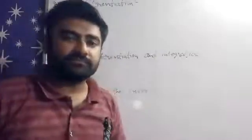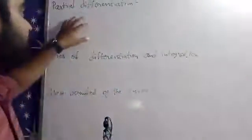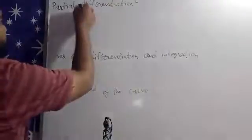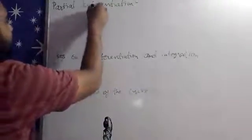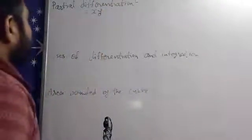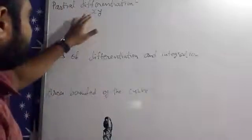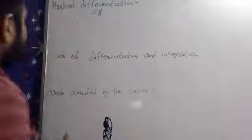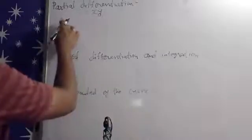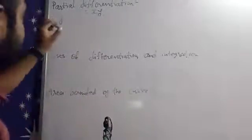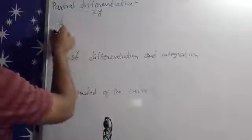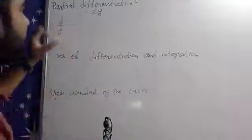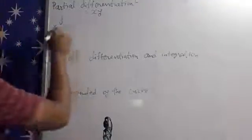So the first topic is partial differentiation. Basically, if we have a term V is equal to X into Y, then V depends on X as well as Y. We denote partial differentiation with 'del'. If the differentiation of V is with respect to X, then it is del by del X.